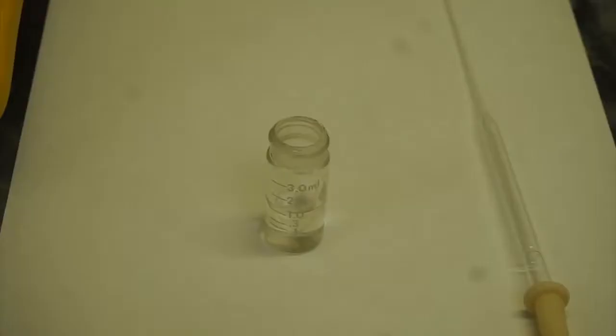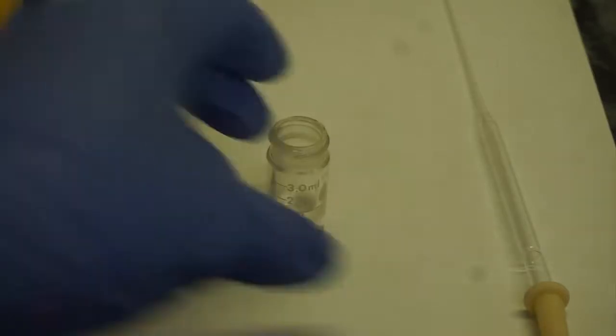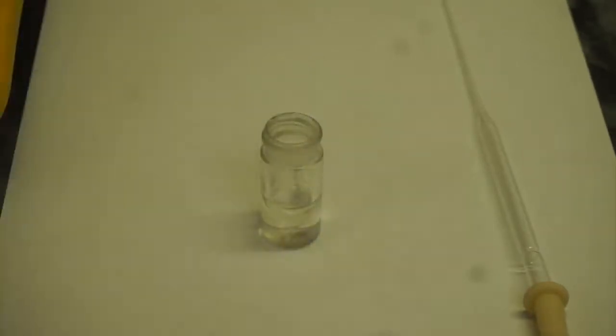After collecting all condensates in the 3 milliliter conical vial, as you can see, there are two layers formed. In this mixture product, there are water, unreacted 1-butanol, and N-butyl bromide, which is our target product.